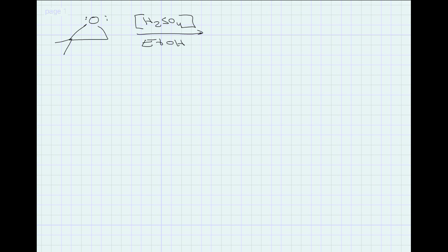Let's take another look at this acid-catalyzed ring opening of an epoxide. If you have this epoxide here and you're trying to open it with catalytic sulfuric acid and ethanol, your product will look something like this, where you'll attack at the tertiary carbon since it can better stabilize a carbocation. This will be your product of the reaction.